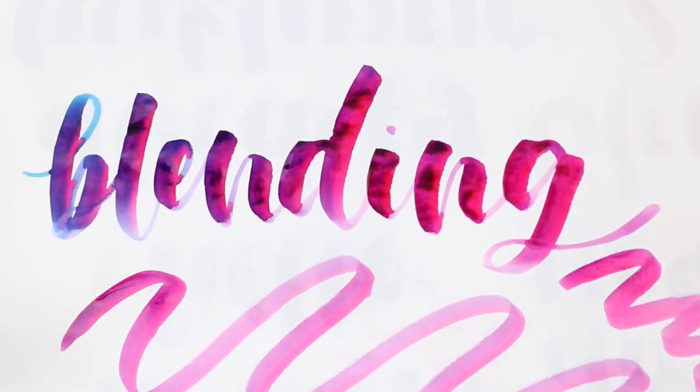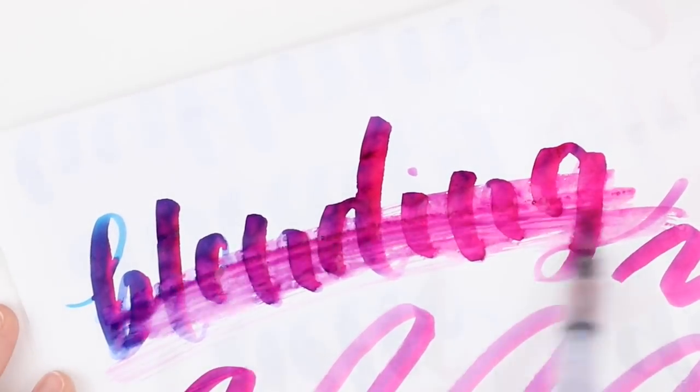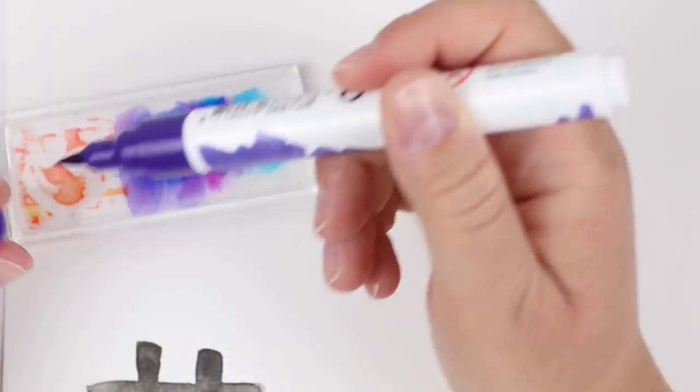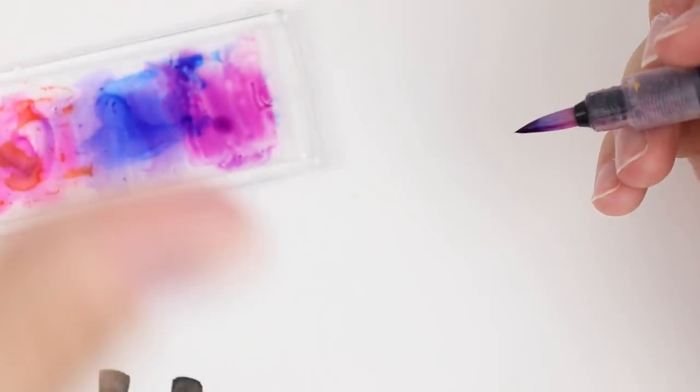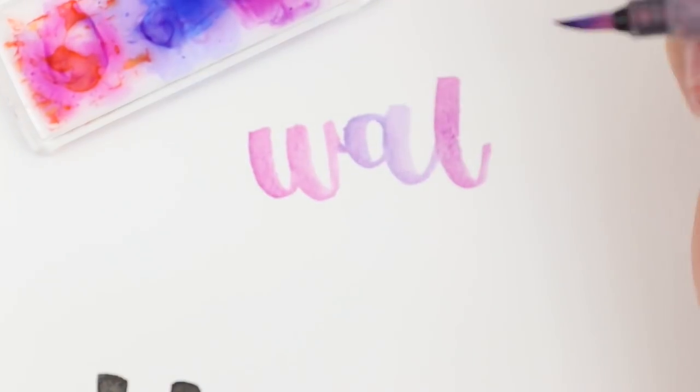But they do dry beautifully onto watercolor paper, so I wanted to show you a way to use them on watercolor paper without ruining the brush tips. In this example I'm coloring the marker onto a piece of acrylic. You could use ceramic or plastic, and then I'm picking it up with my water brush. You could also just use a wet paintbrush as well.